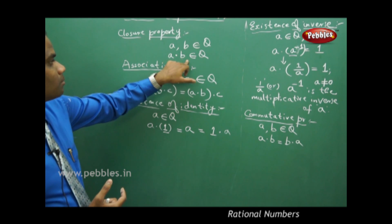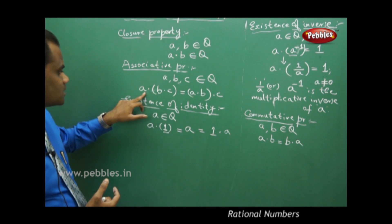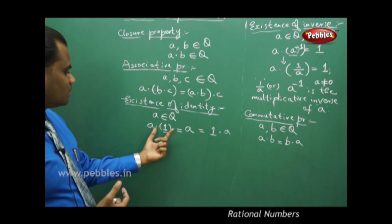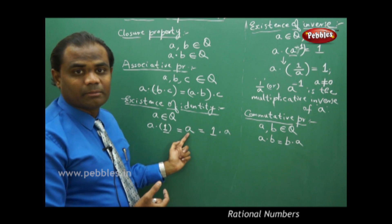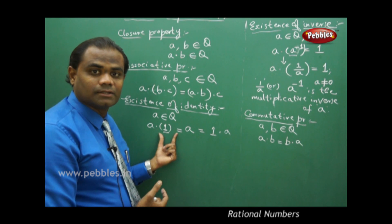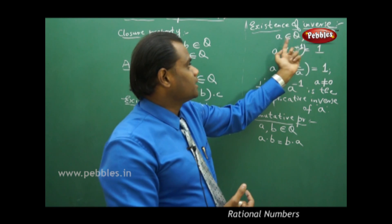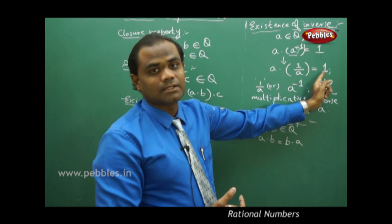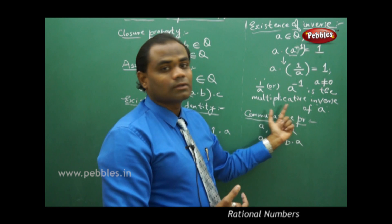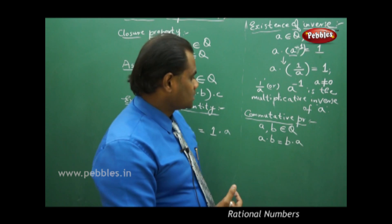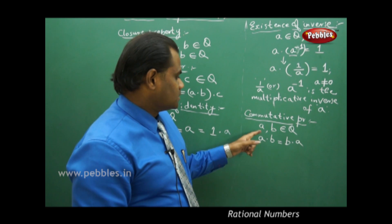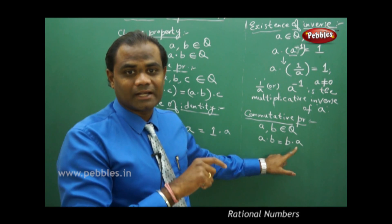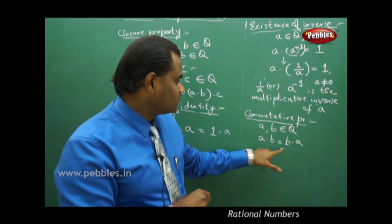To recap: the closure property states A·B must belong to Q for all A, B belonging to Q. The associative property: (A·B)·C = A·(B·C). The existence of identity: multiplying 1 to any element of Q gives back the original element, so 1 is the multiplicative identity. Existence of inverse: A×(1/A) or A×A⁻¹ = 1, so 1/A is the multiplicative inverse. And commutative: A·B = B·A for any two elements in Q.